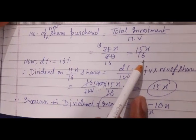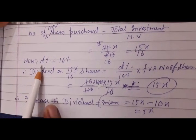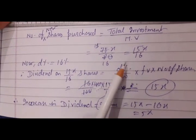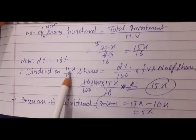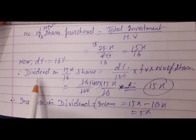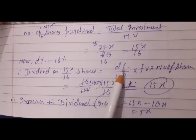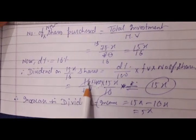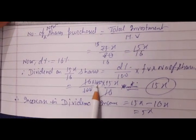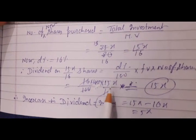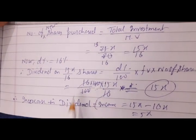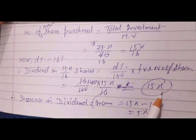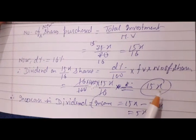The dividend percent on the new shares is 16%. So dividend on 15x by 16 shares equals: 16 upon 100, into face value 100, into number of shares 15x by 16. The 16s cancel and the 100s cancel, giving dividend from the second type of shares equals 15x.